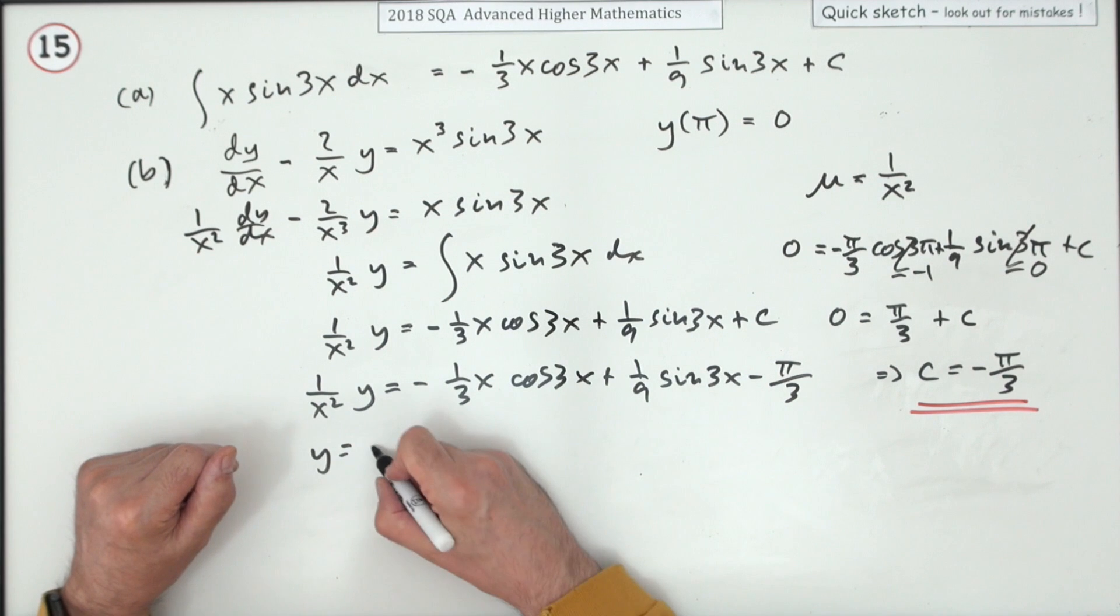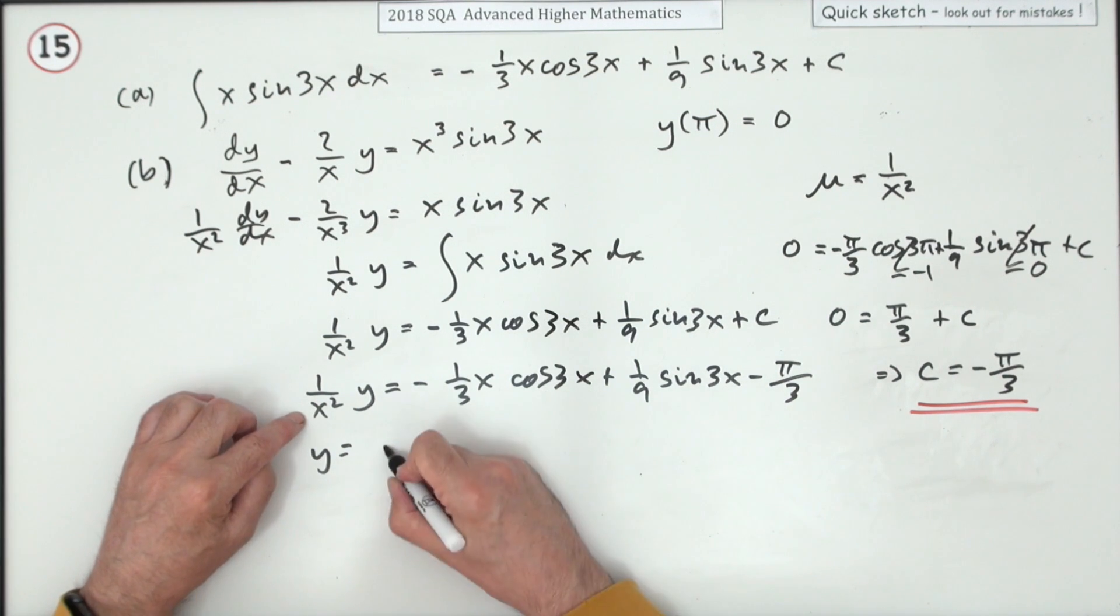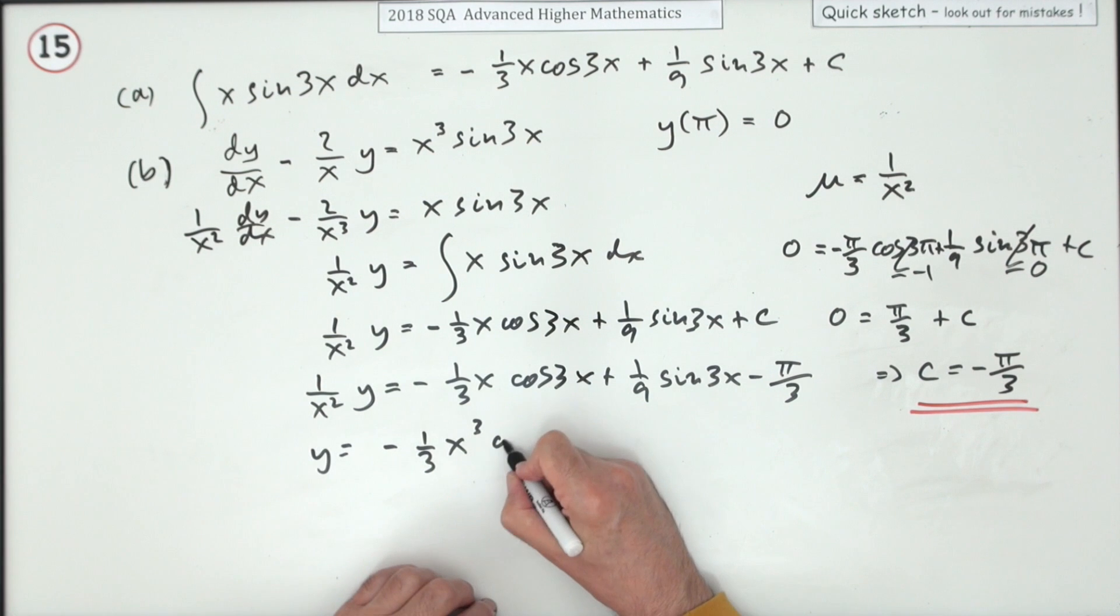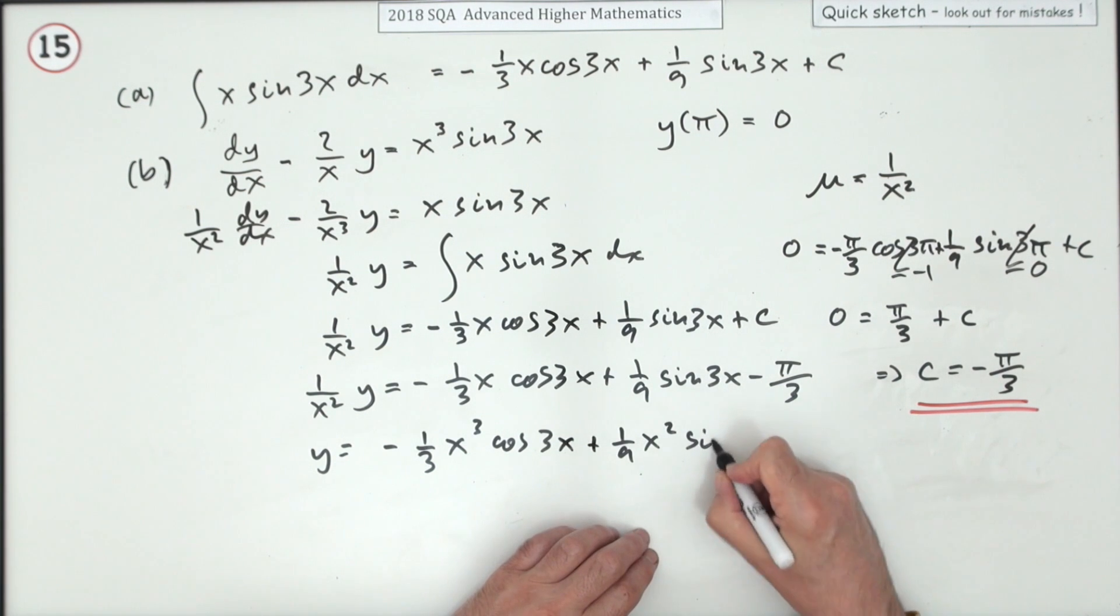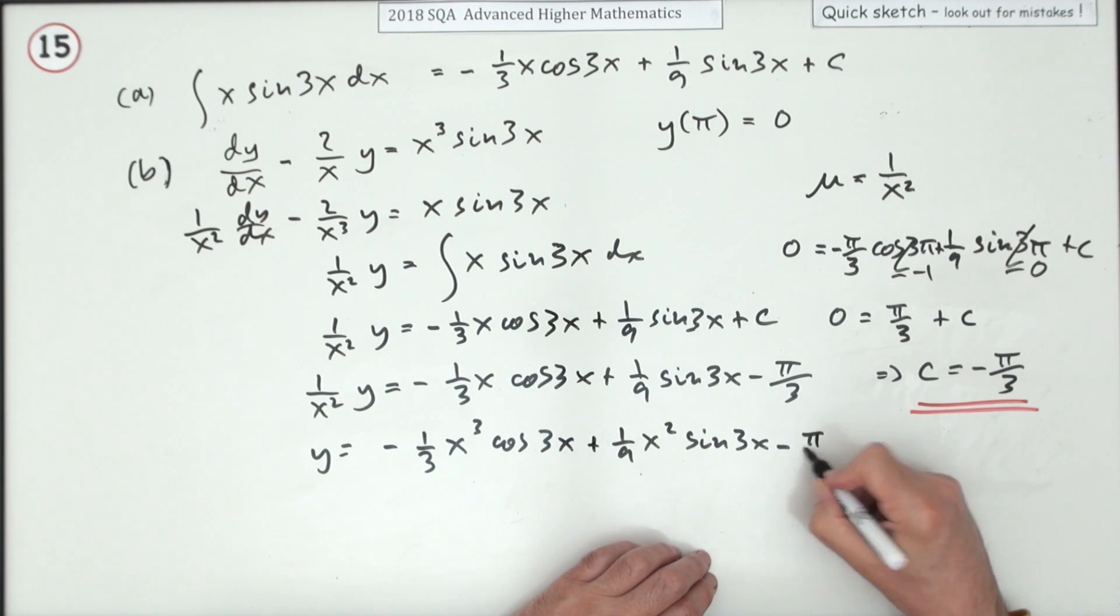So finally y will be - now it just depends how much we want to tidy up - it'll be negative one third of x cubed cos 3x plus one ninth of x squared sine 3x minus π upon 3 x squared.